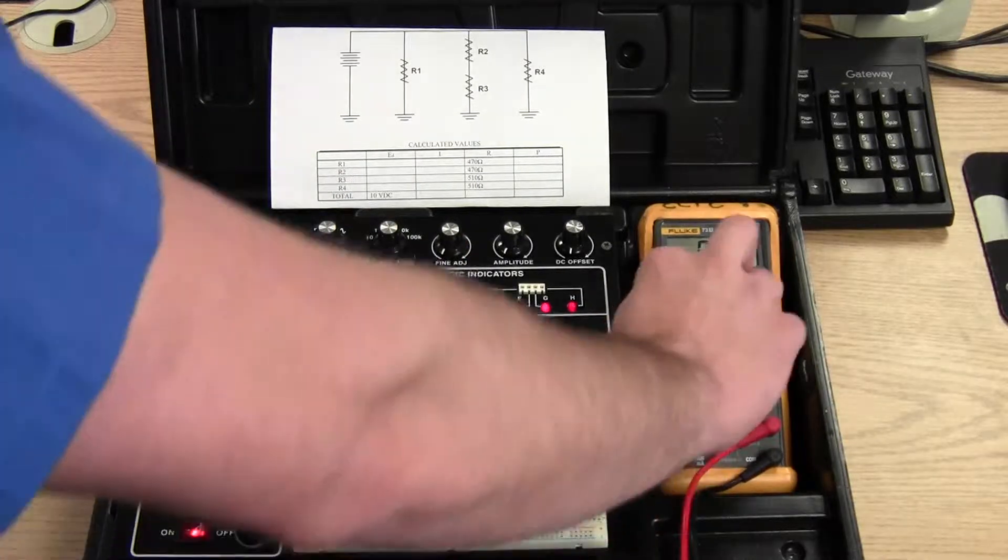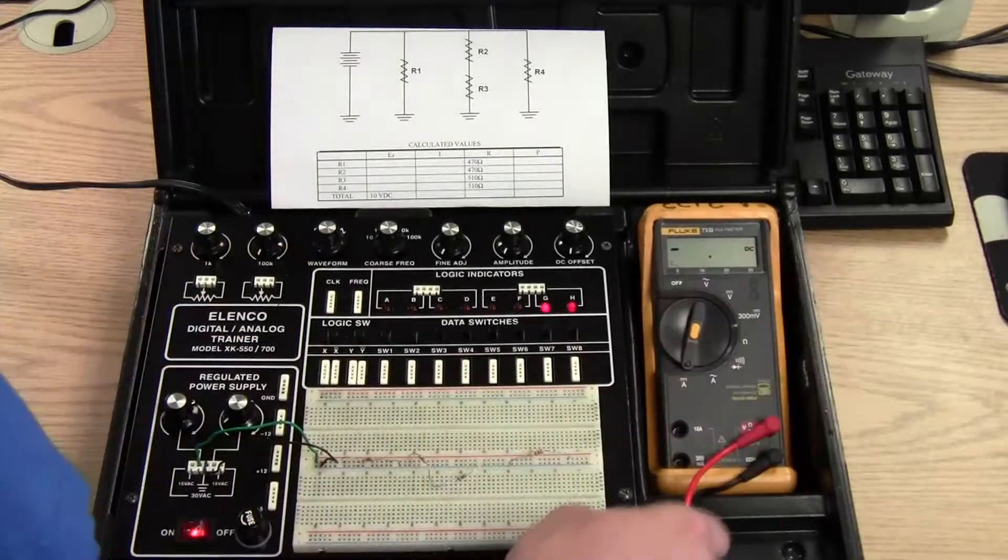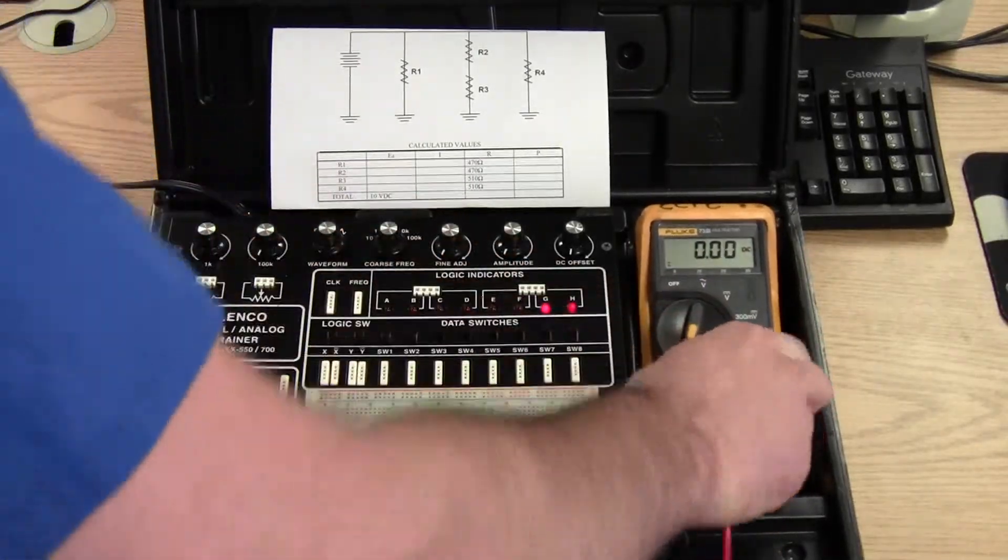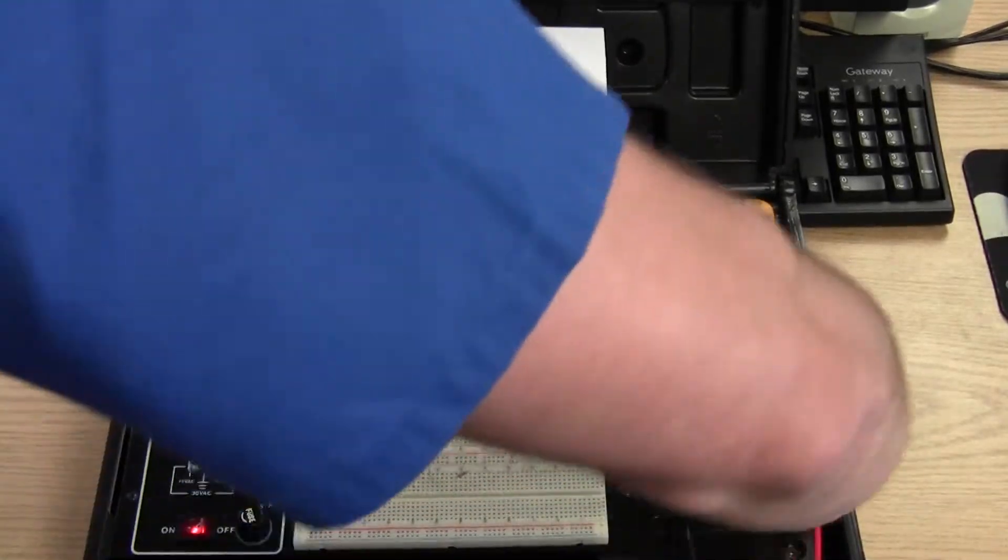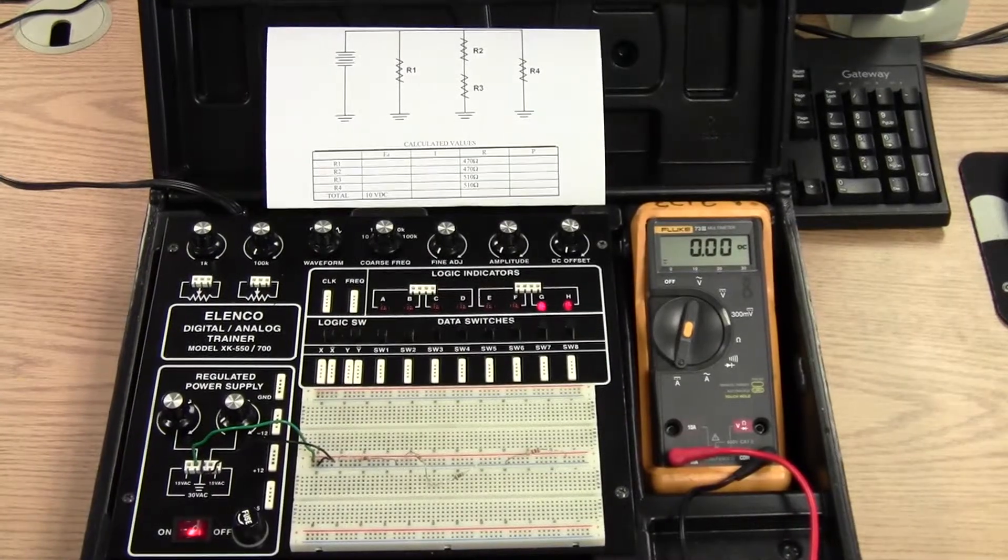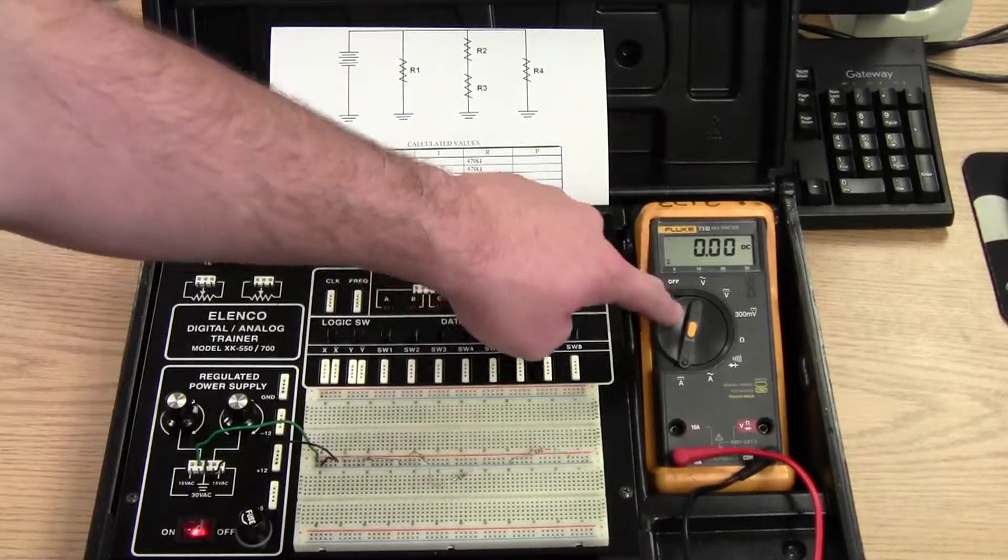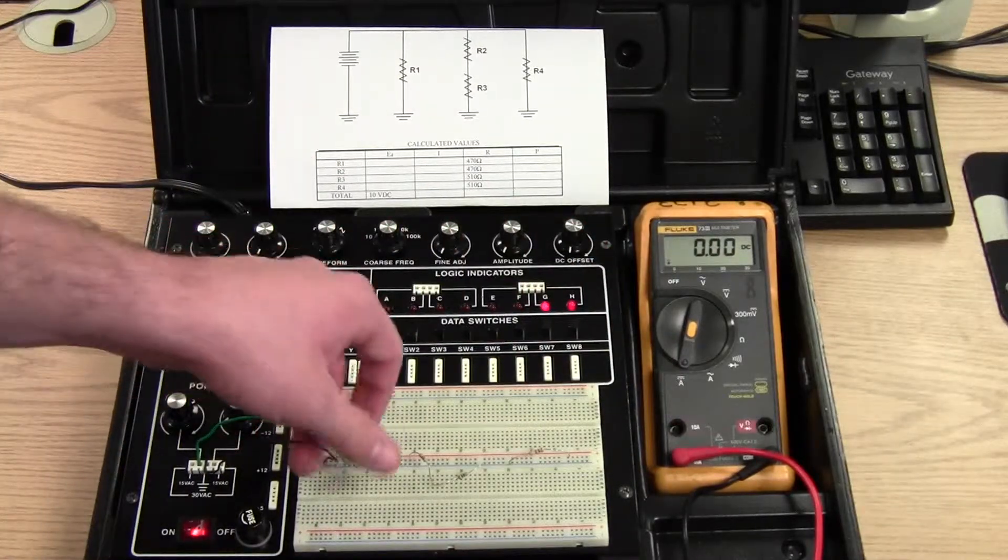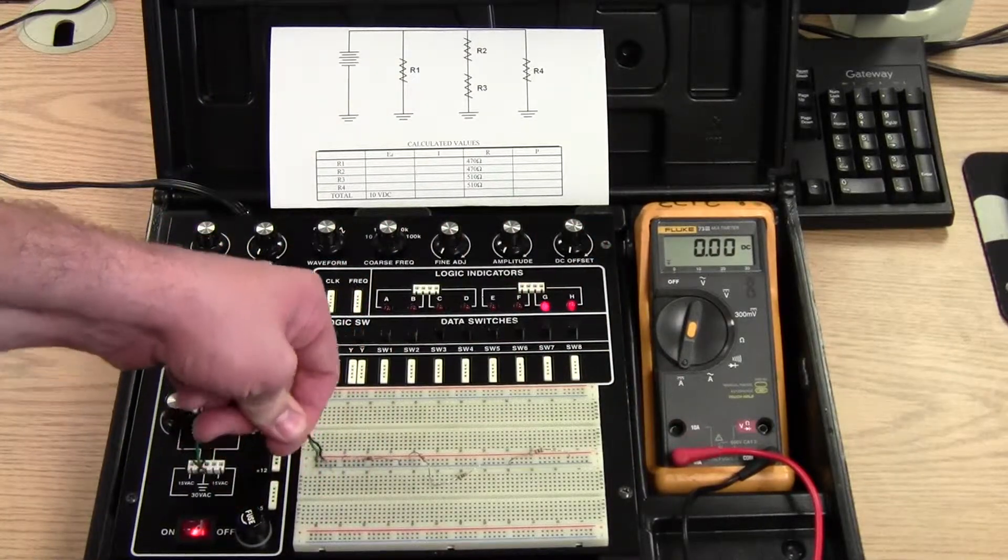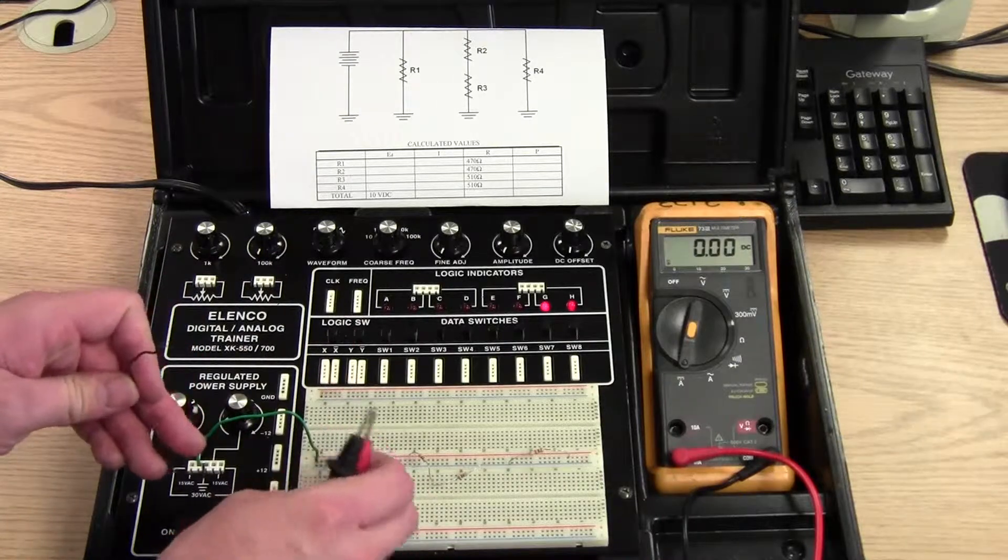Now current. So I've calculated the current in this circuit. It's less than 300 milliamps. So I'm going to set my meter up to measure current. Lead in the 300 milliamp slot. And I'm going to break the circuit. And I'm breaking it on the ground side here.